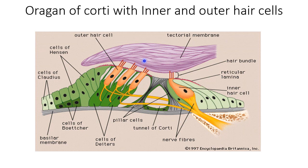Another structure just above the organ of Corti is the tectorial membrane, which is a gel-like structure. The stereocilia are embedded into this tectorial membrane. So this is the complete organ of Corti, which is responsible for receiving signals from the atmosphere and transducing them into a chemical signal, which then travels through the afferent nerve to the brain.